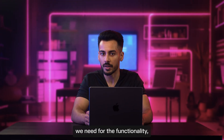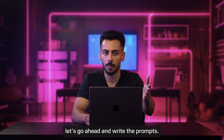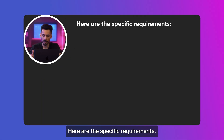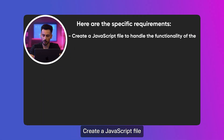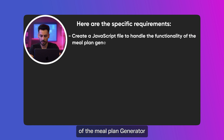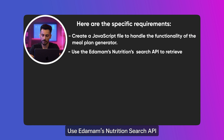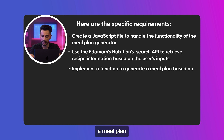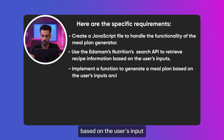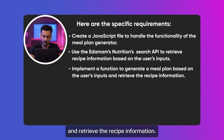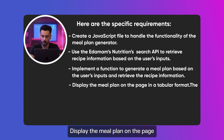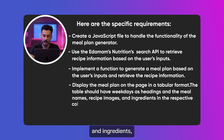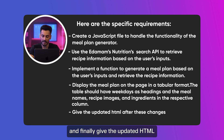Now that we have everything we need for the functionality, let's go ahead and write the prompt. Here are the specific requirements: create a JavaScript file to handle the functionality of the meal plan generator, use Edamam's nutrition search API to retrieve recipe information based on the user's input, implement a function to generate a meal plan and retrieve recipe information, display the meal plan showing meal names, recipe details and ingredients, and finally give the updated HTML after these changes.